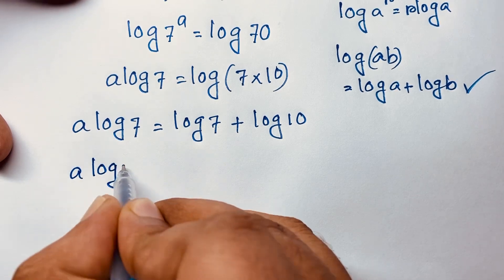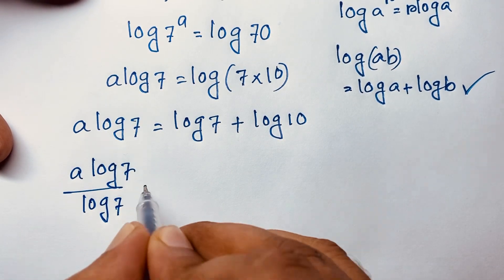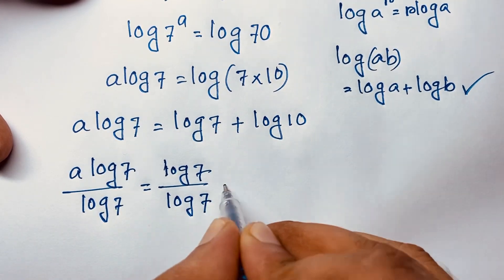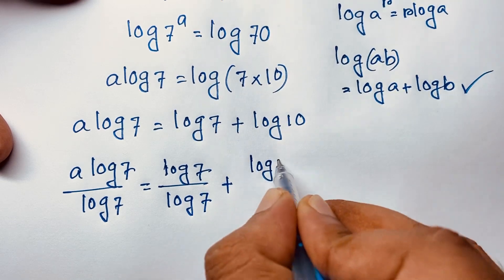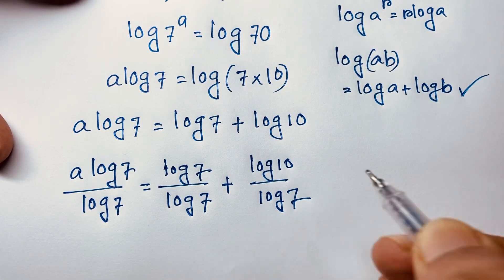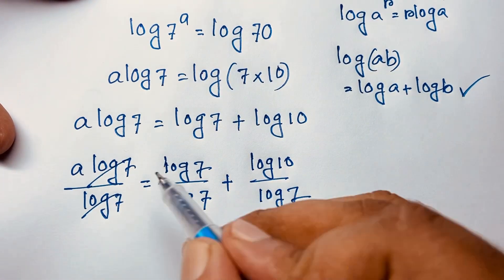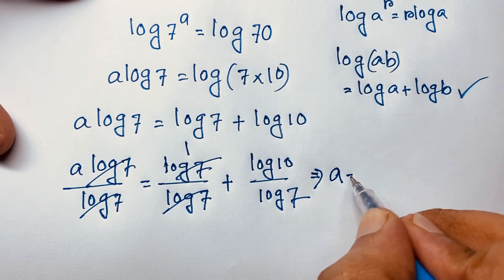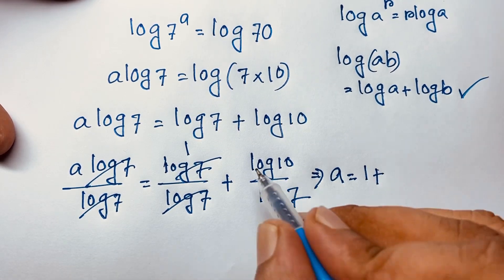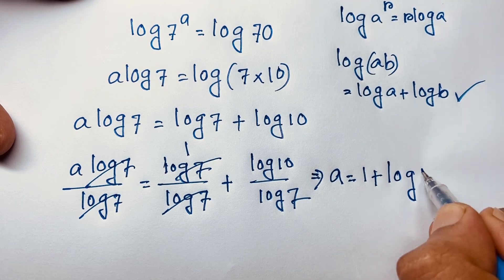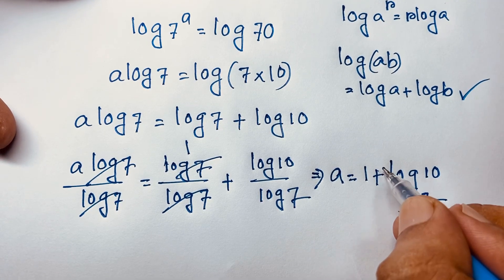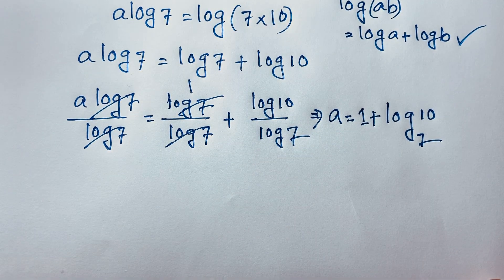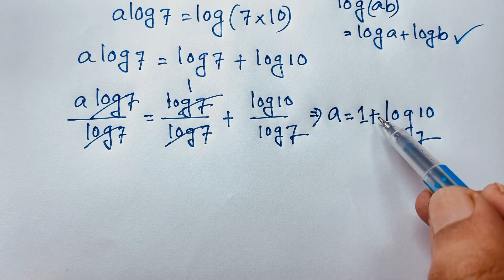Now dividing both sides by log 7: a·log 7 divided by log 7 equals log 7 divided by log 7 plus log 10 divided by log 7. The log 7 terms cancel, giving 1. So a equals 1 plus log 10 divided by log 7, which is our final answer.